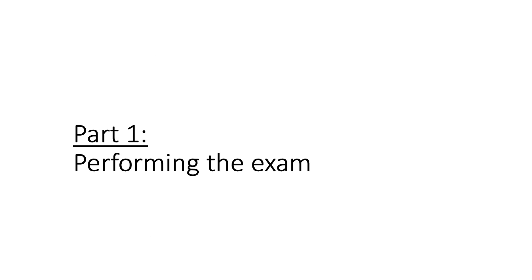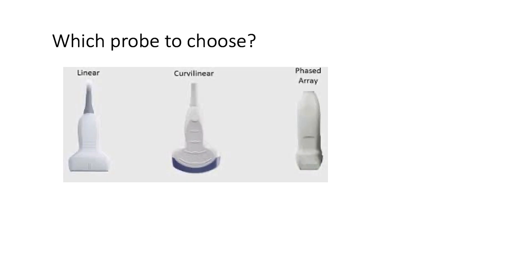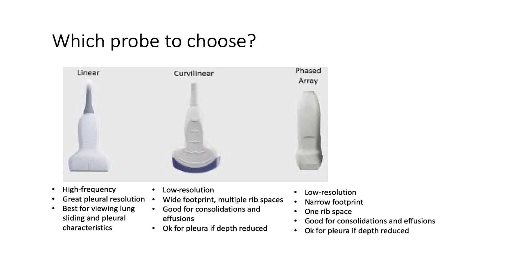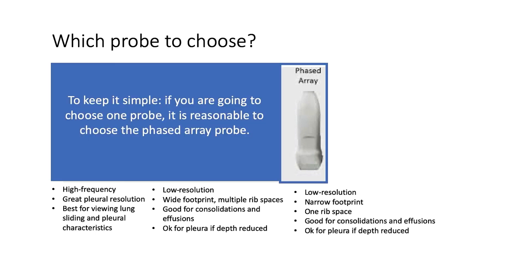We'll start with how to perform the exam — which probe to choose? The linear probe has the highest frequency, so it's best for viewing lung sliding and pleural characteristics. Curvilinear and phased array probes have lower resolution, so are better for deeper structures such as larger consolidations or effusions. Curvilinear can see multiple rib spaces, while phased array can only see one. All of these are reasonable options, but if you only want to choose one to keep it simple, we would recommend the phased array.